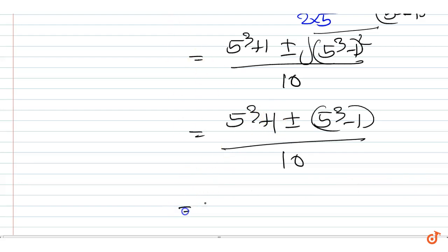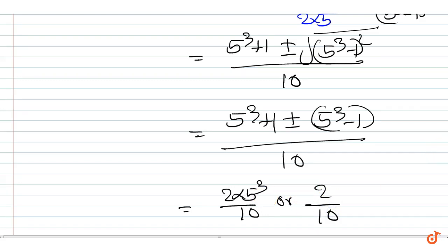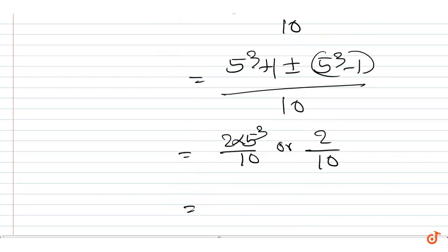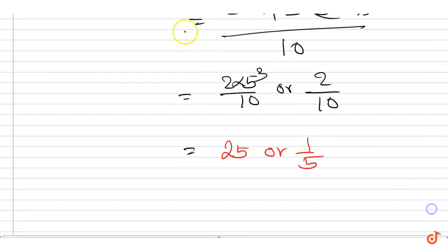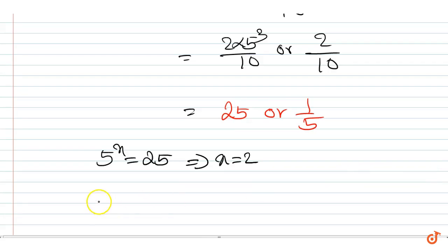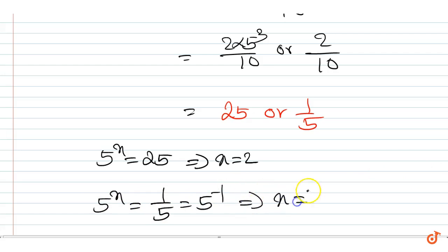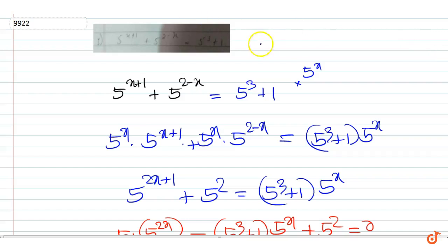Therefore the solutions are 2 times 5 cubed divided by 10, or 2 divided by 10, giving y equal to 25 or 1 by 5. Thus 5 to the power x equals 25 gives x equals 2, and 5 to the power x equals 1 by 5, which equals 5 to the power minus 1, gives x equals minus 1. Therefore the solutions are x equals 2 and x equals minus 1.